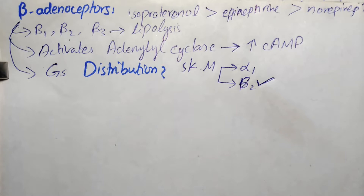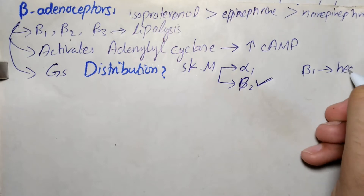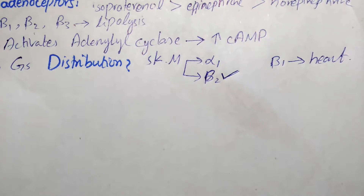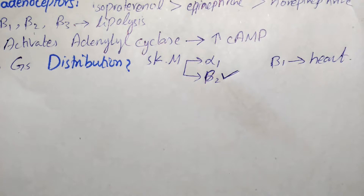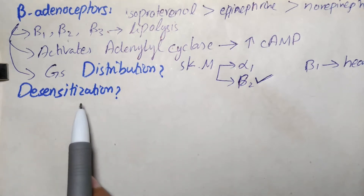Beta 1 is predominant in the heart. One type of receptor is predominant in each respective organ, but it does not mean that is the only type present — multiple types of receptors can be present in a particular organ. Prolonged exposure to catecholamines can reduce the responsiveness of these receptors, a phenomenon called desensitization.